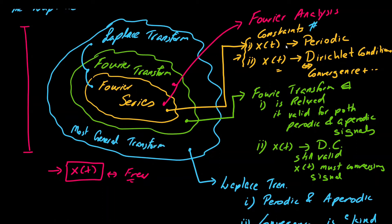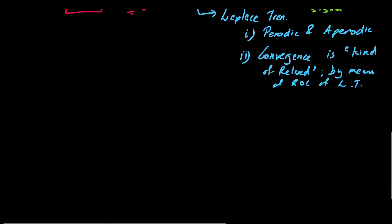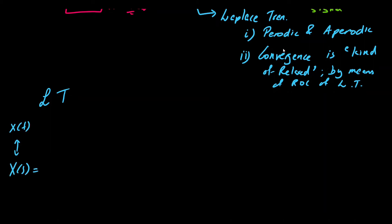If the Laplace transform is so powerful, then why do we need the Fourier transform and Fourier series, since these have more constraints? What are the benefits of moving from the Laplace transform to the Fourier series? Let us discuss that by means of some mathematics. We have the Laplace transform, and we know that x(t) has a Laplace transform X(s).